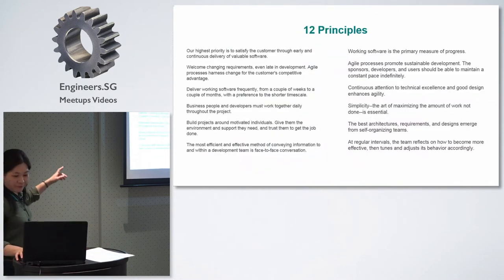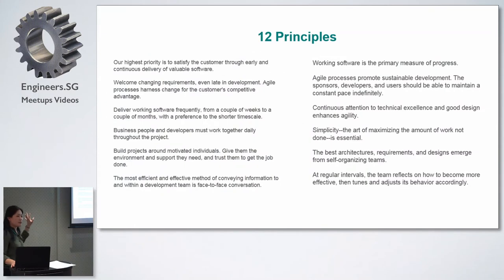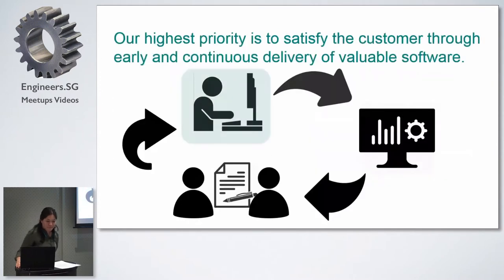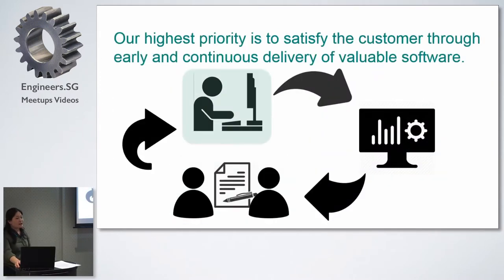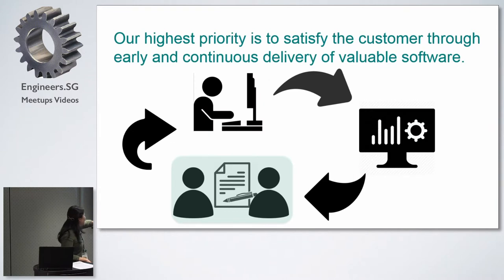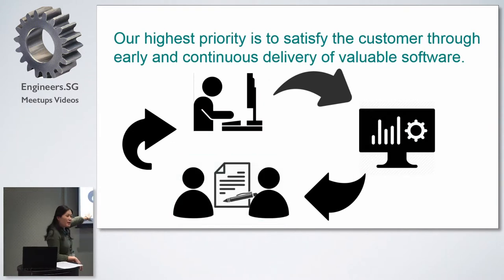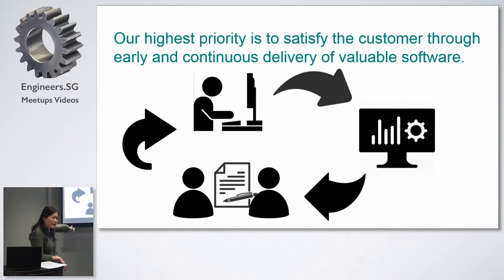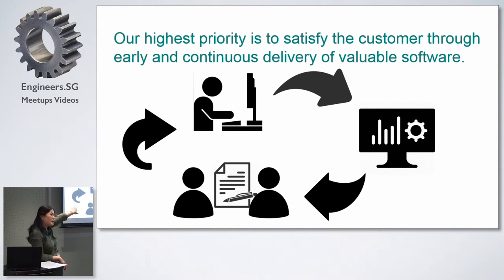From these four rules in the Agile Manifesto came about the 12 principles that support those four rules. The highest priority is to satisfy the customer through early and continuous delivery of valuable software. This is an iteration: you get the requirements, consult the customer, develop the software, get your product, then go back, let the customer see the product, get the next requirement, check whether it satisfies any changes, and then work through the software again. So these are iterations of an Agile project.